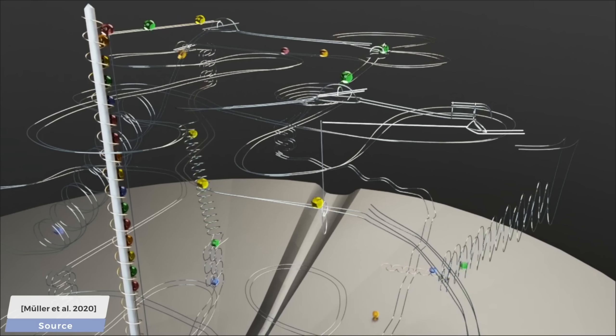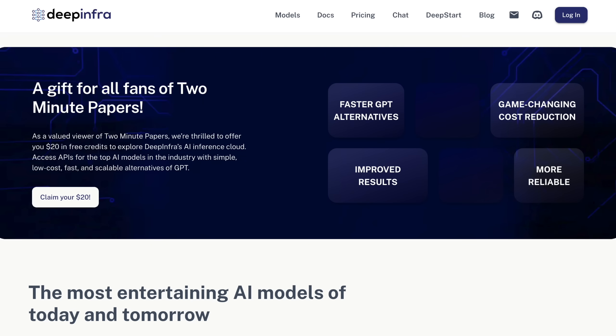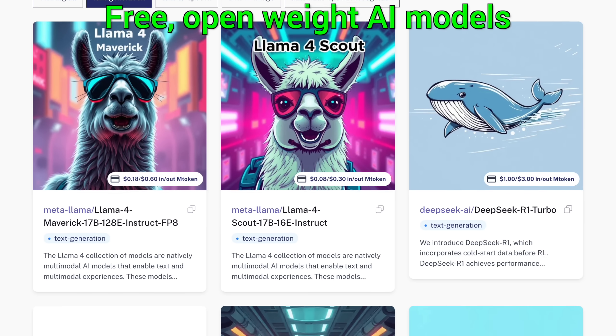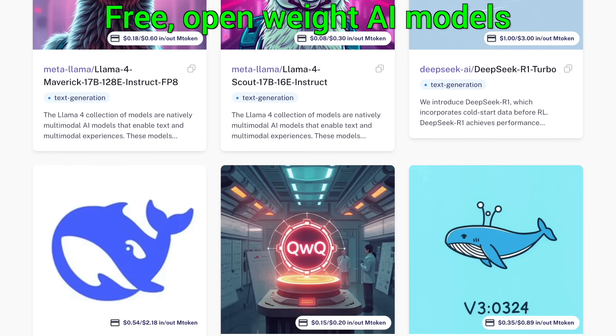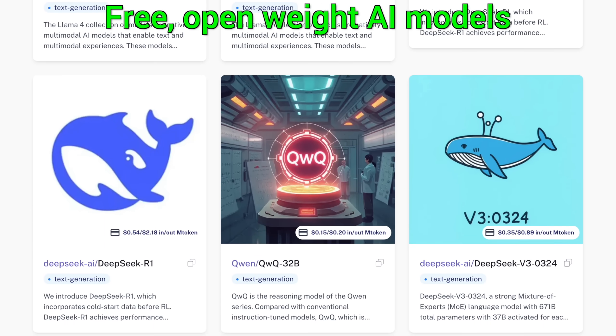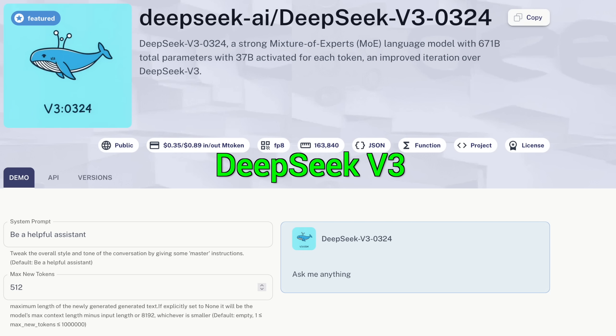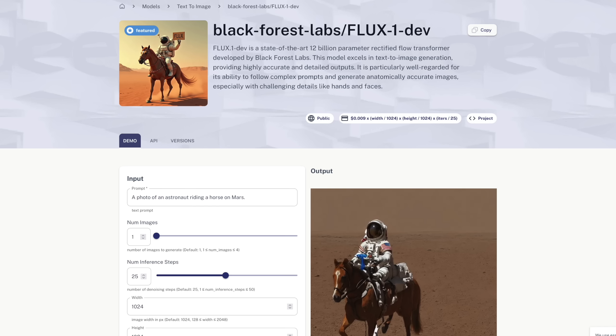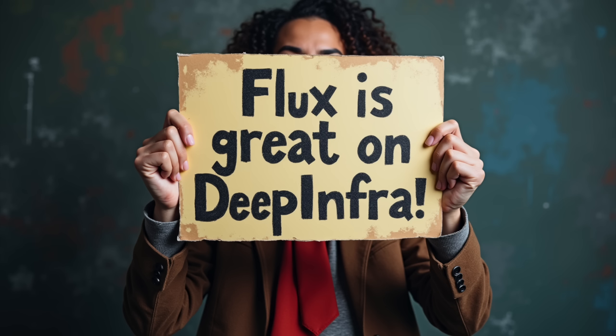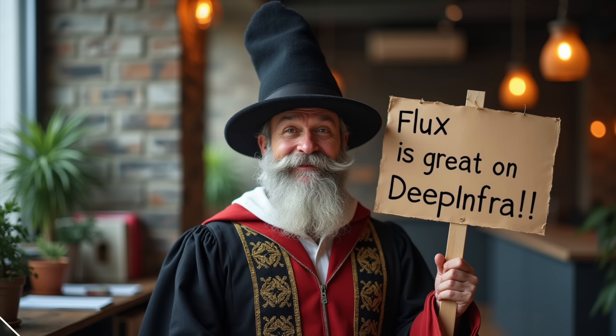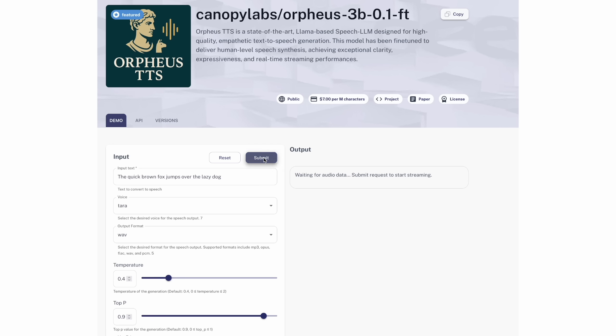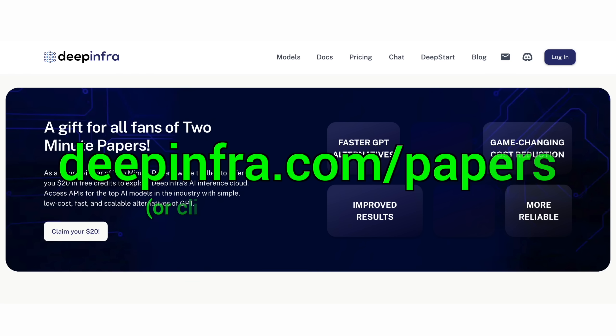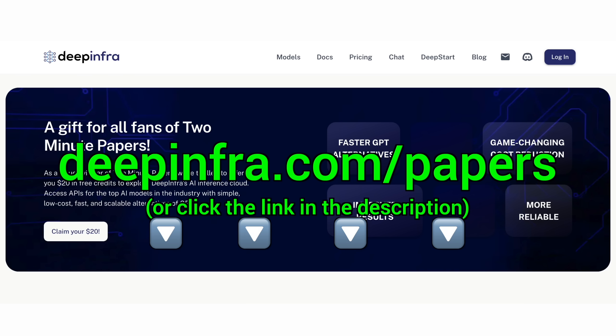What a time to be alive! Fellow scholars, check this out! This is DeepInfra, an AI inference cloud where you can get access to the best open AI models like DeepSeq, Lama, and pay up to 10 times less than elsewhere. Or use my favorite, the amazing Flux Text-to-Image AI generates speech from text and more. It is super easy to use. Try it out today at deepinfra.com slash papers or click the link in the description and you get $20 of credit for free.